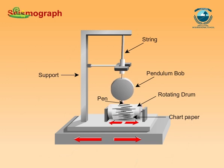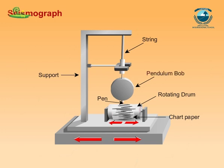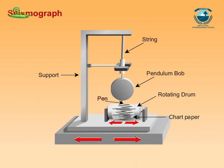These are called seismic waves. The waves are recorded by an instrument called a seismograph. The instrument is simply a vibrating rod or a pendulum which starts vibrating when tremors occur. A pen is attached to the vibrating system, and the pen records the seismic waves on a paper which moves under it.